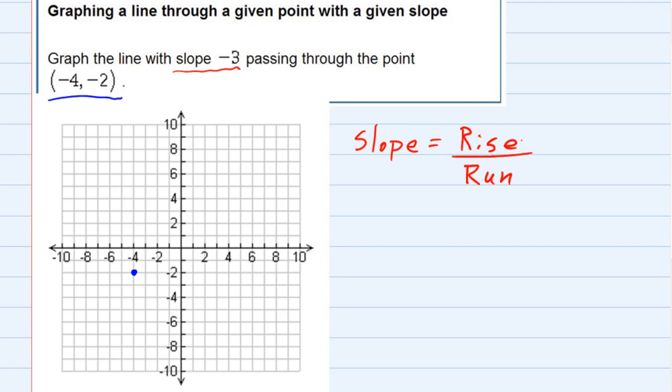I need the slope to be a fraction, and the slope they gave me is -3. But if I want to think of it as rise over run, I can just make it -3/1.